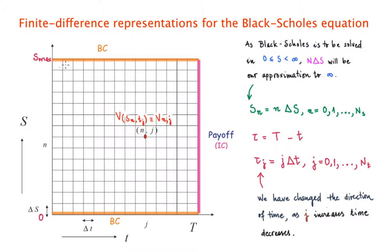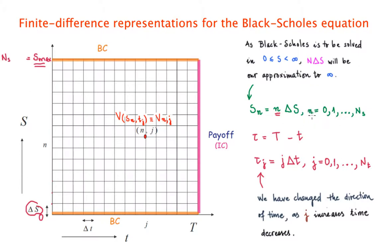We need to define S-max considering the strike price in our problem. Although the Black-Scholes equation is solved in general for S ranging from zero to infinity, numerically we must specify S-max. We define delta-S as the step on the S-axis, and each specific point is identified by the index n, running from zero to N_S, the number of steps. So S-max equals N_S times delta-S.